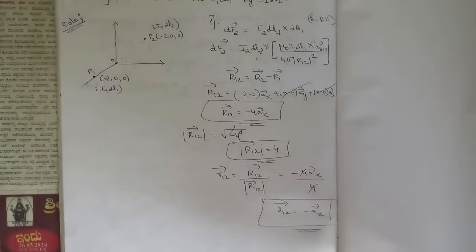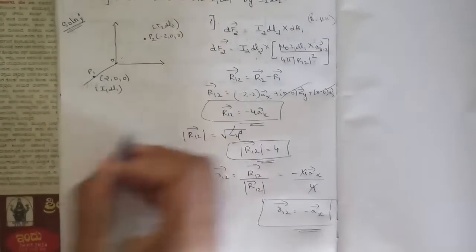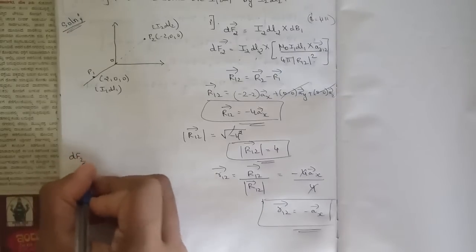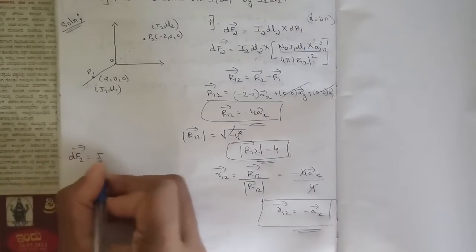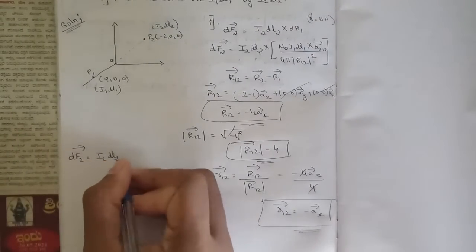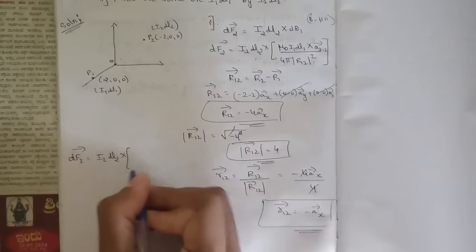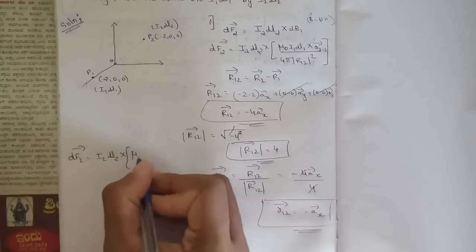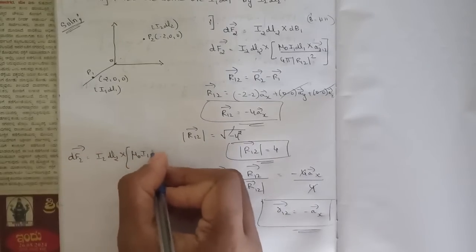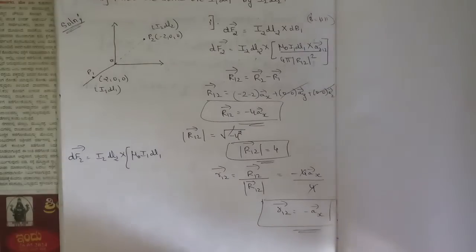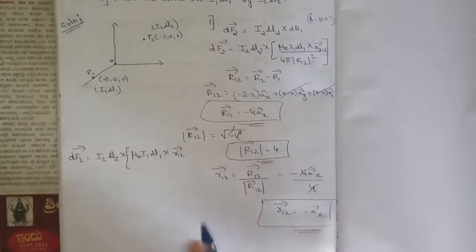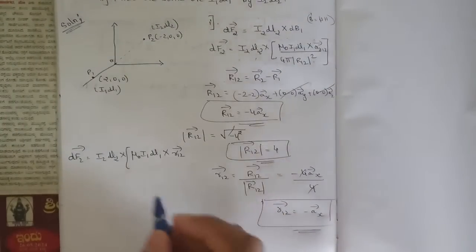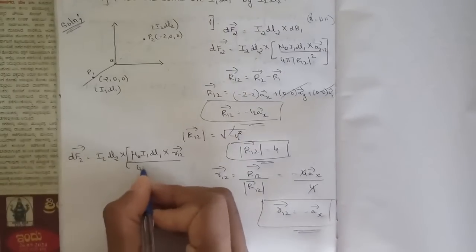Now substituting back into the formula: df2 equals i2 dl2 cross mu0 times i1 dl1 cross r12 vector divided by 4pi times magnitude of r12 squared. We can write this with r12 vector in place of the unit vector term.